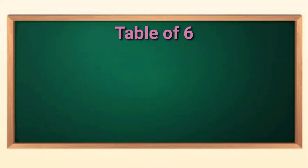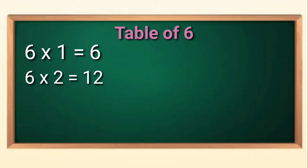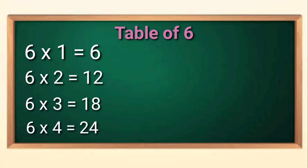One small table of six. Six ones are six. Six twos are twelve. Six threes are eighteen. Six fours are twenty-four. Six fives are thirty.